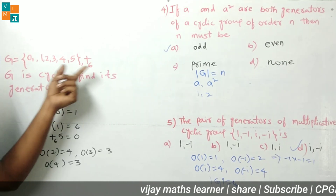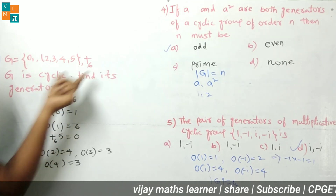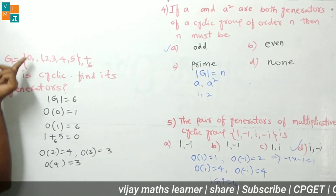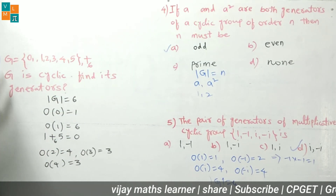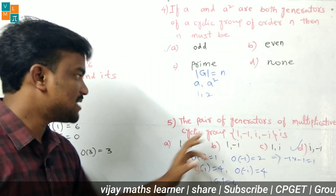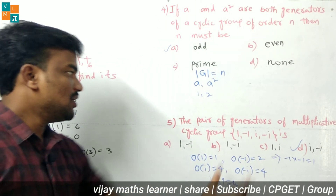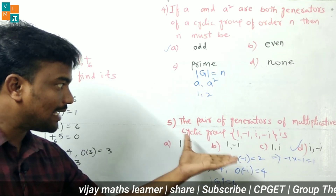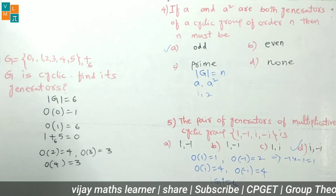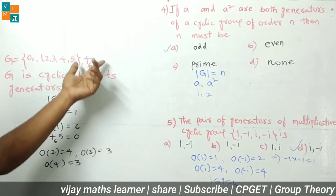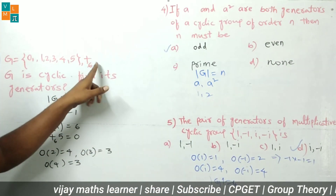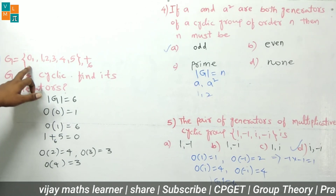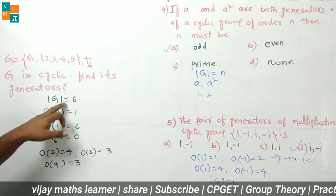The sixth question: G = {0, 1, 2, 3, 4, 5} with respect to addition modulo 6. Find the generators of this cyclic group. This is an additive group; the binary operation is addition. The order of the group is 6 (six elements).